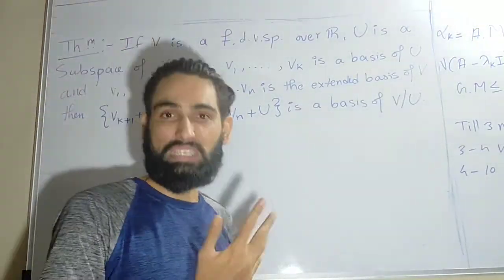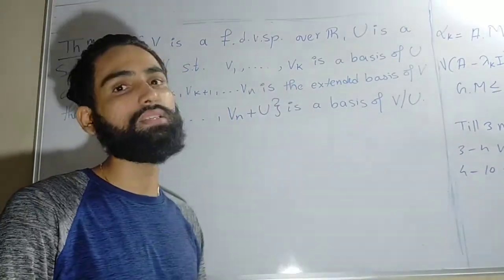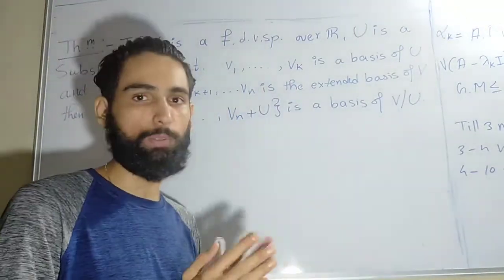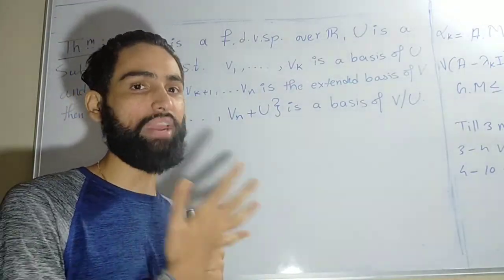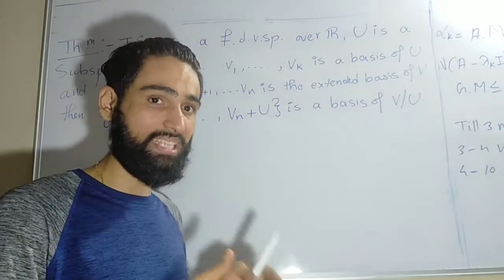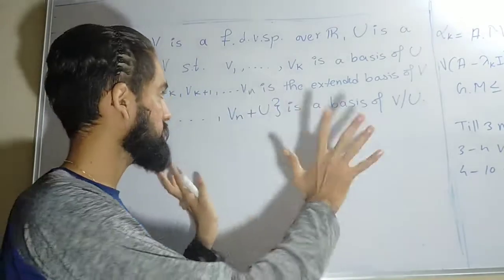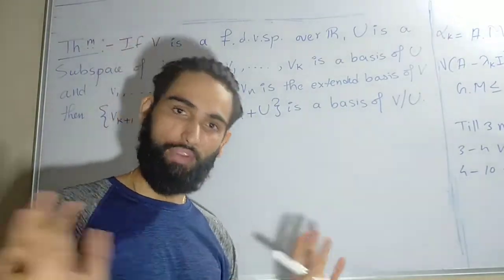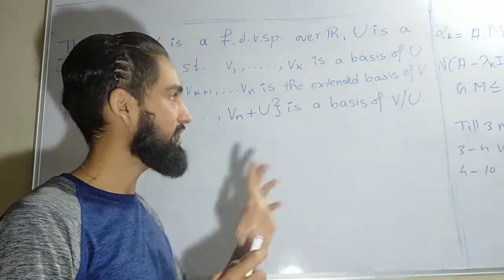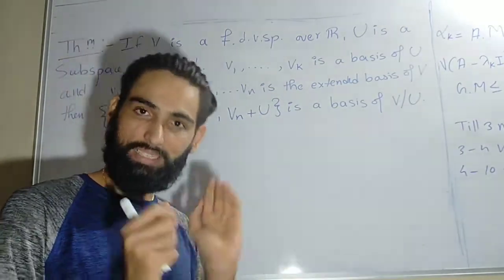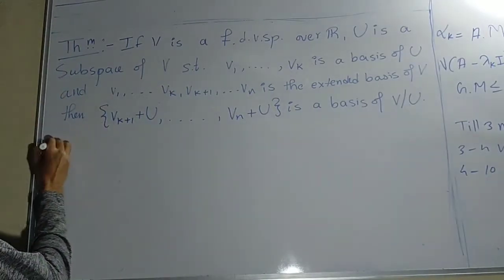A question arises: does there always exist an extended basis of V using any subspace? The answer is yes. If I know the basis of any subspace I can extend it to the basis of the vector space — this is always possible. Hence this theorem is valid for finite dimensional vector spaces. Without proving that the extended basis always exists, we will now prove this theorem.